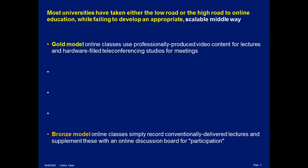Participation consists of students adding a comment to an online bulletin board, never actually interacting with other students at all. What we really need is a silver model in between these that attempts to achieve the same kinds of immediacy and interaction as the gold model, but does it at a cost level that makes it scalable to the university as a whole.